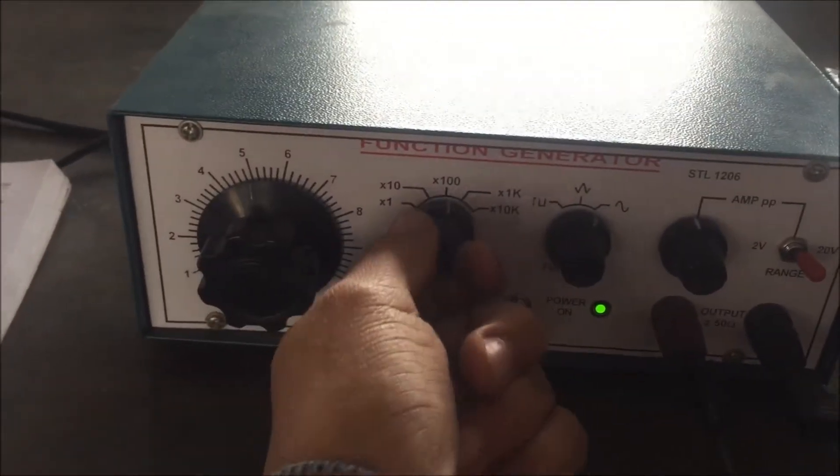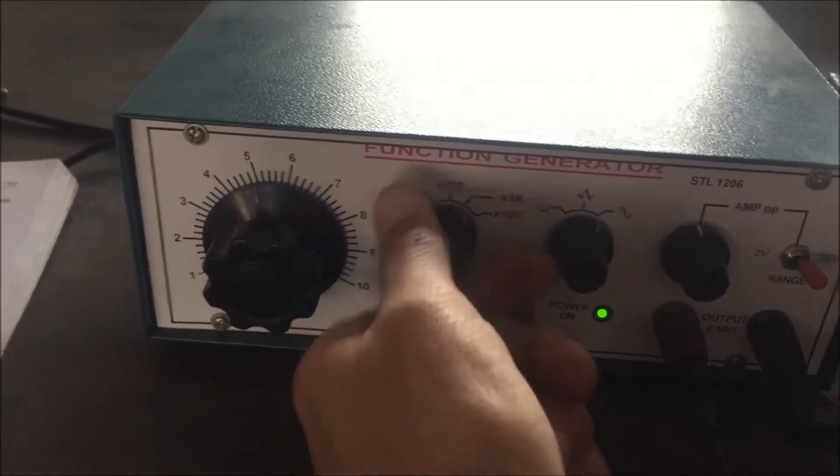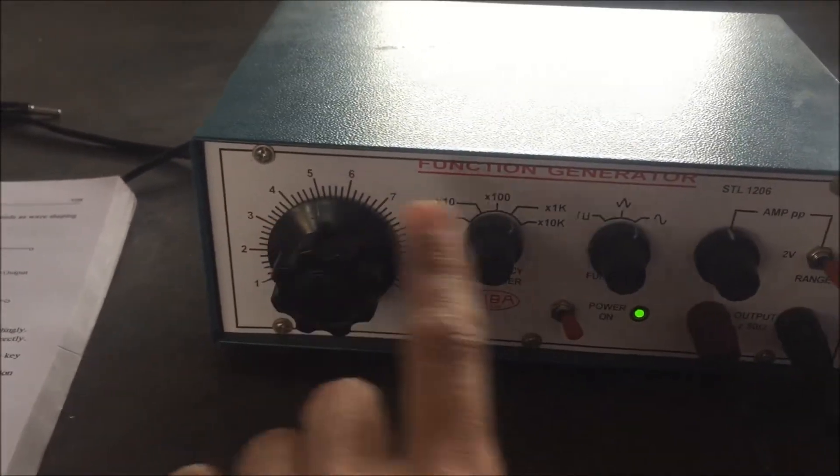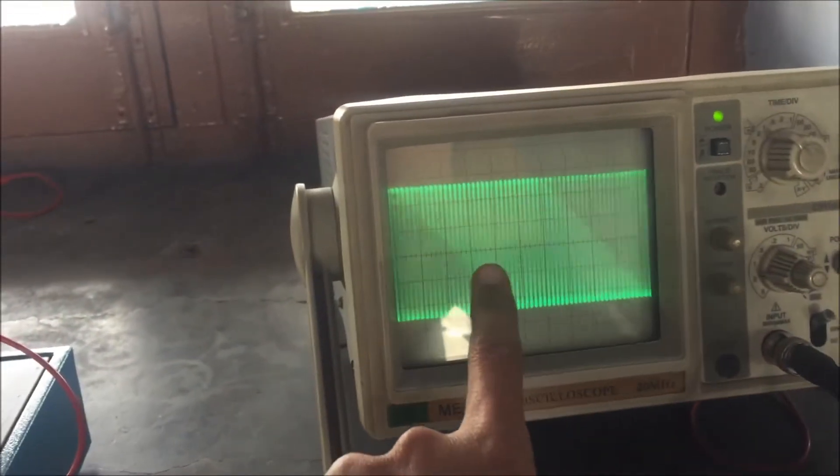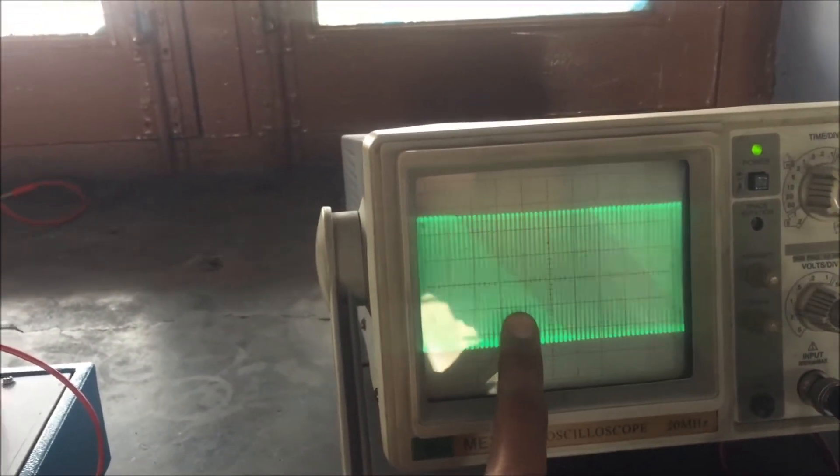Now I will change the frequency, the multiplier to 1000. Now the frequency is 5000 and you can see the output for the 5000 hertz frequency.